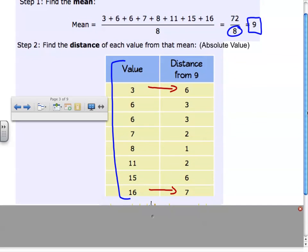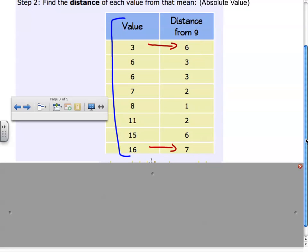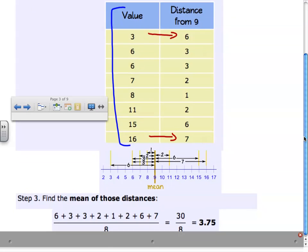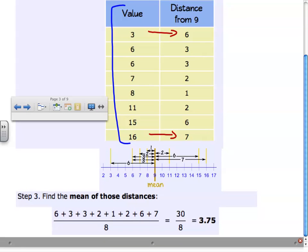That's the hardest part. So what you now do is, if you take a look at this diagram, that shows you all of the values, and how far away they are from the mean. Then what you do for step 3 is you find the mean of those distances. So you add them all together, and then since you have 8, when you add them together, you do 30 divided by 8, and you get 3.75.